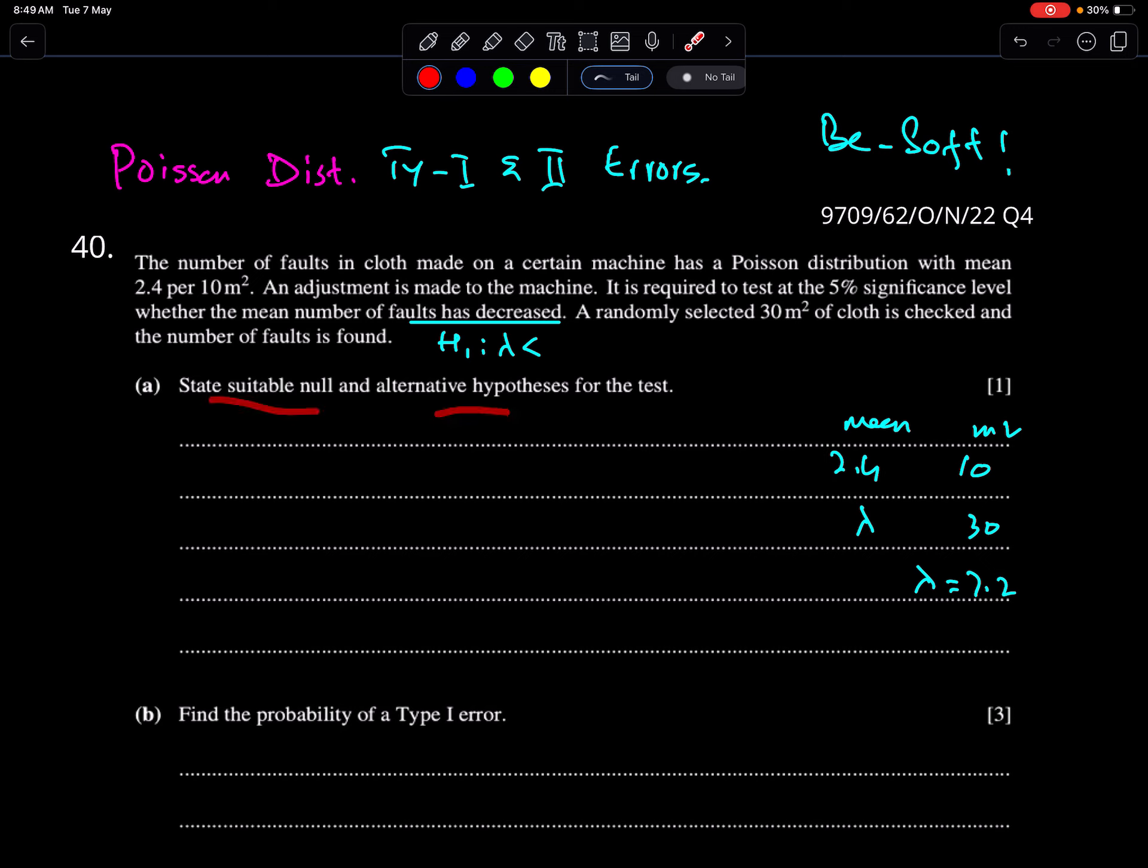State null and alternative hypothesis for the test. This is very simple. H0 is lambda equals 7.2, and H1 is lambda less than 7.2. This means lambda has decreased. Lambda has not decreased.